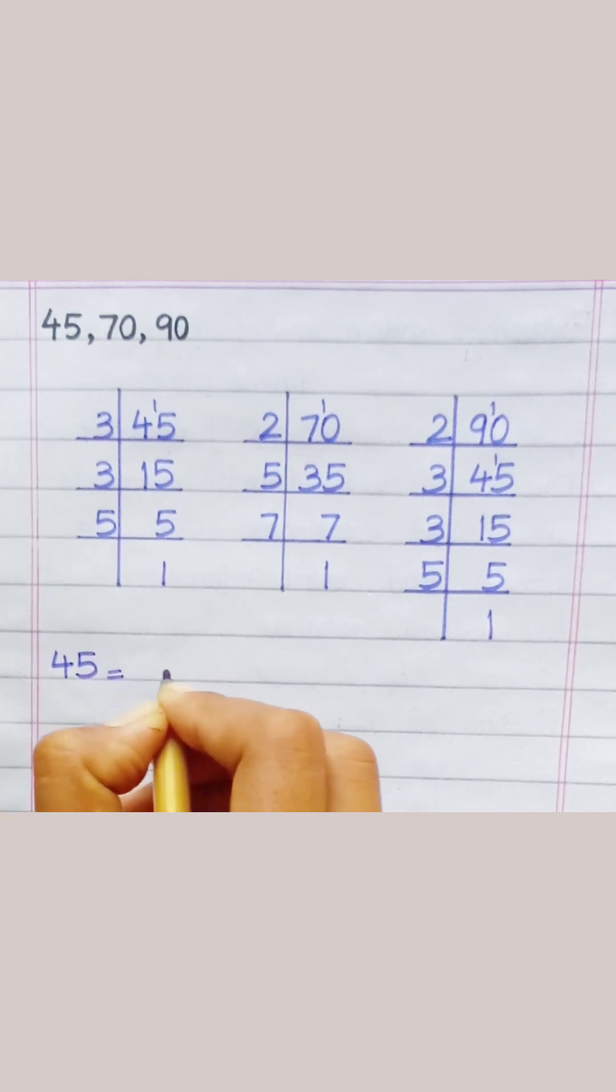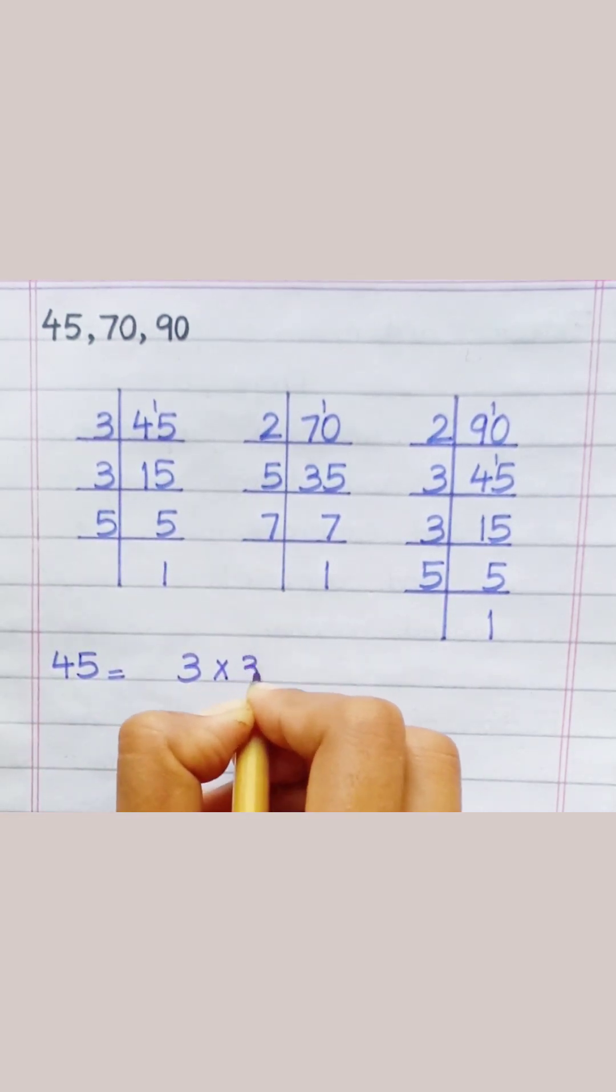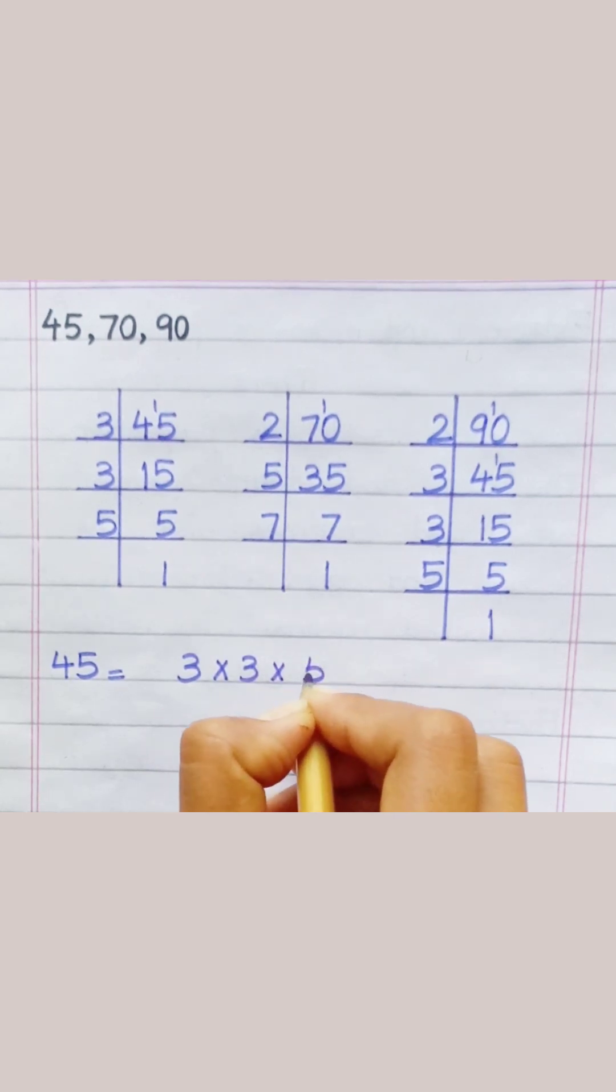Forty-five equals three multiply three multiply five.